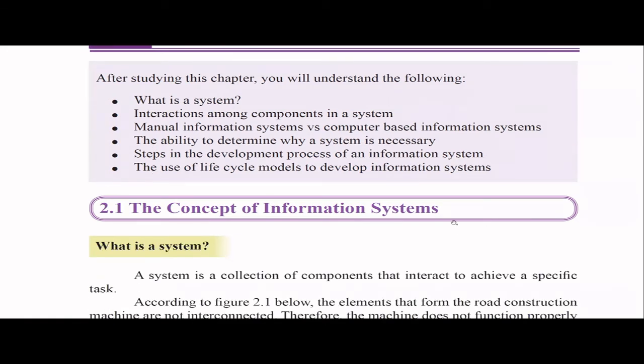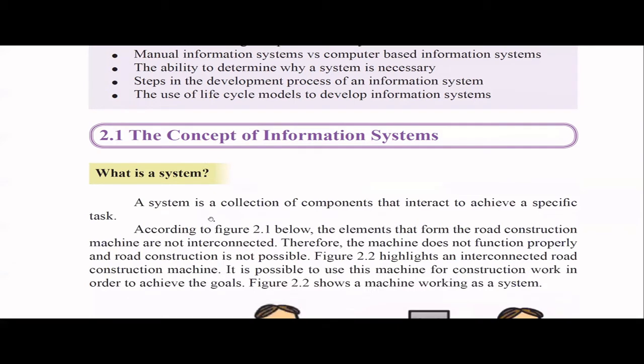First, we'll learn about the concept of an information system. What is a system? A system is a collection of components that work together to achieve a specific task. For example, think about the human body — there are so many systems: the respiratory system, digestive system, blood circulatory system. You learn about the human body as a system in science too. All these components work together and interact to achieve a specific task.